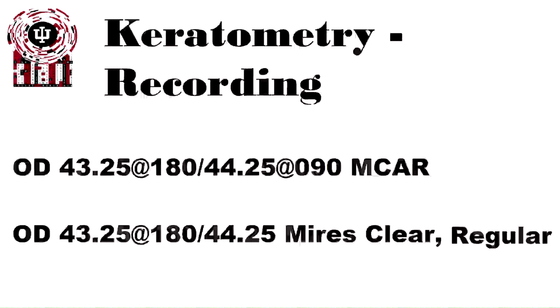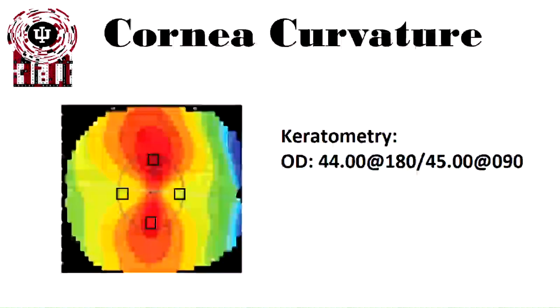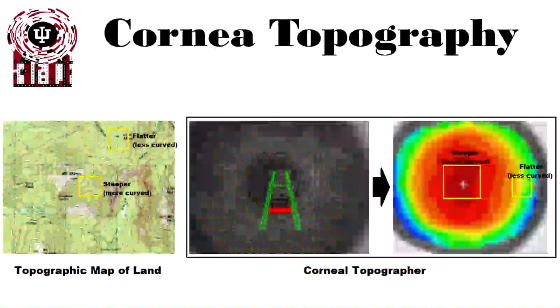We can then record our final curvature findings. In this example, the right eye is 43.25 at 180 and 44.25 at 90 MCAR — which stands for Myers Clear and Regular. In clinic, though, we don't typically use keratometry anymore, because it only measures a couple of discrete locations on the cornea, missing the entire rest of the cornea and how its curvature changes. For that reason, we move on to corneal topography, which is the more traditional method for measuring curvature of the front of the eye now.